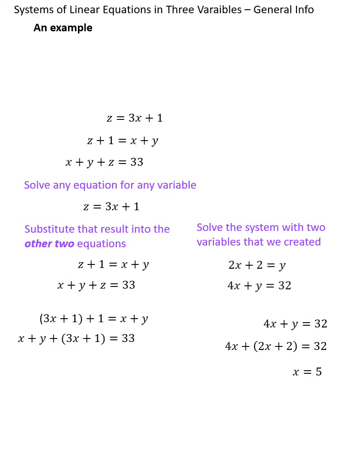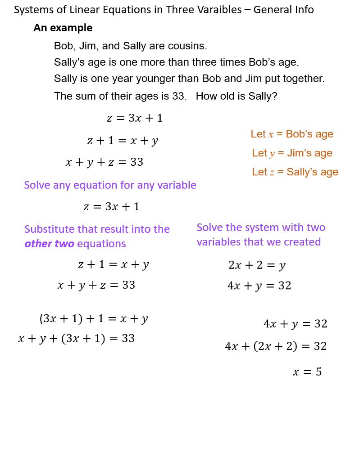So what does x equals 5 mean? Wouldn't we normally, at this point, plug that back in and solve for y and z and complete the system of equations? Well, we could do that. But remember, x, y, and z represent things in real life in this particular case. So x equals 5 means that Bob is 5.